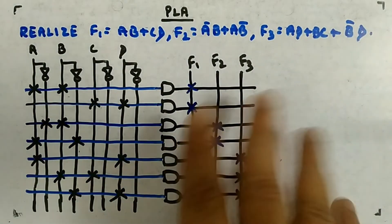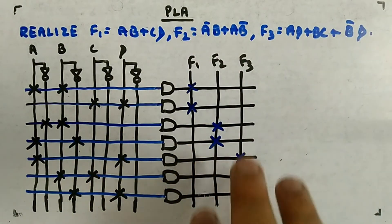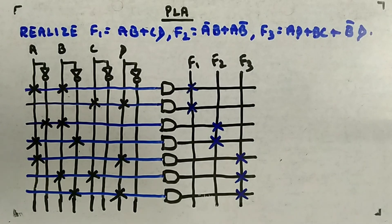So that's how you are designing the functions f1, f2, and f3. You have programmed the AND gate, you have also programmed the OR gate.